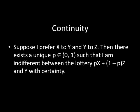What is continuity? Suppose I preferred x to y and y to z, and we'll say that this preference relation is transitive, so I also prefer x to z. Then there exists a unique p in between 0 and 1, such that I'm indifferent between the lottery where I get x with probability p and z with probability 1 minus p, and getting a lottery where you get y with certainty.